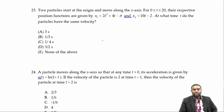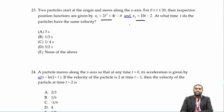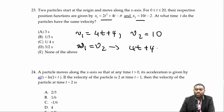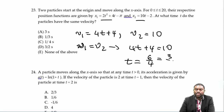Two particles start at the origin and move along the x-axis for 0 less than t less than 20. Their respective positions are given by two equations. At what time t do the particles have the same velocity? V₁ equals 40 plus 4t and V₂ equals 10t. Setting V₁ equal to V₂: 40 plus 4t equals 10t, giving t equals 6, which is the same as 3/2... so the answer requires t equals 6 seconds.